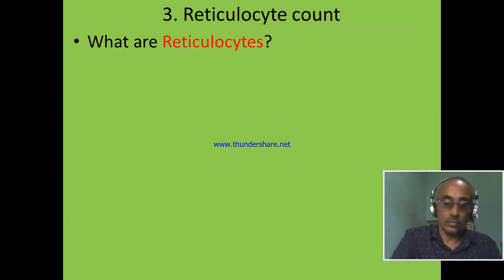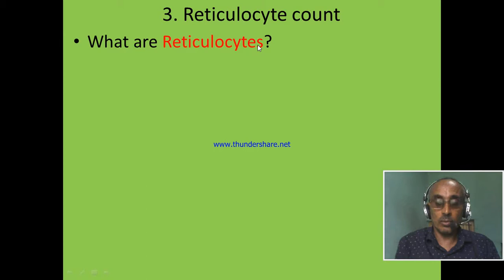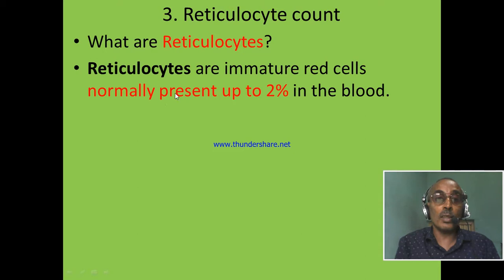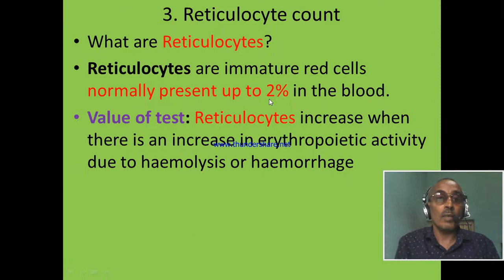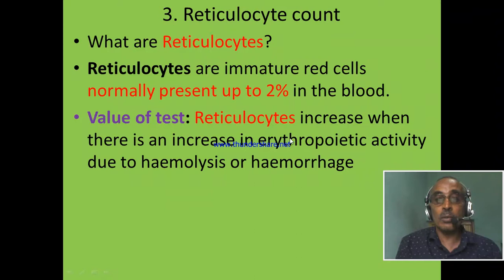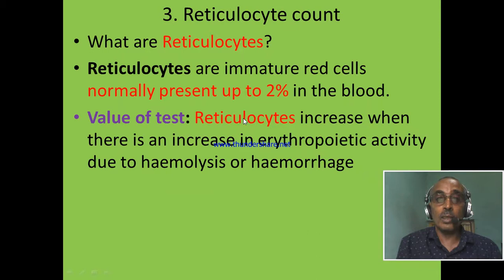The third hematologic test is reticulocyte count. What are reticulocytes? Reticulocytes are immature red blood cells, normally found in the blood up to 2%. Reticulocytes can increase whenever there is an increase in erythropoietic activity or red blood cell production due to hemolysis or hemorrhage. This is because bone marrow produces more red blood cells to compensate for the loss of RBCs. At the same time, the reticulocyte count increases in the peripheral blood.